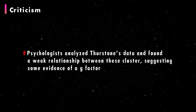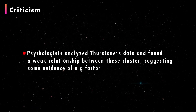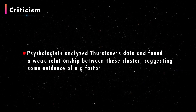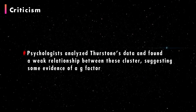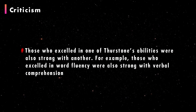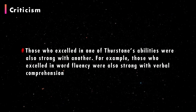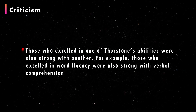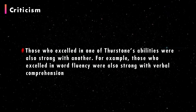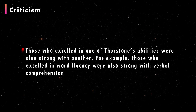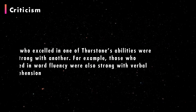Later, psychologists analyzed Thurston's data and found a weak relationship between these clusters, suggesting some evidence of a G factor. Those who excelled in one of Thurston's abilities were also strong in another — for example, those who excelled in word fluency were also strong in verbal comprehension.